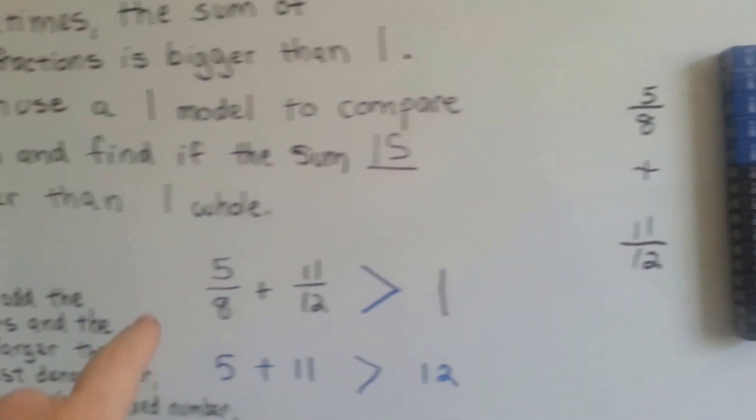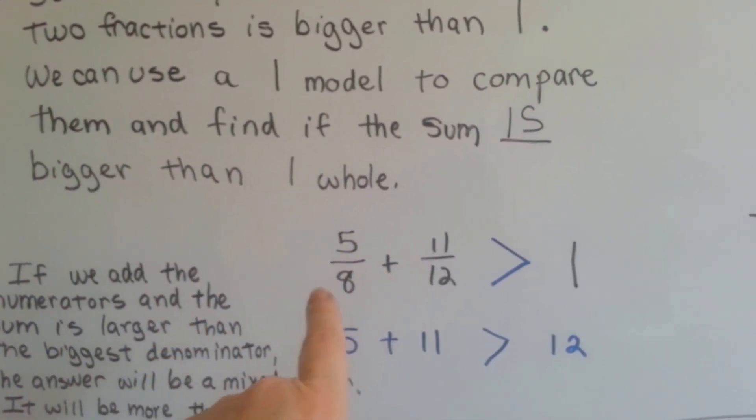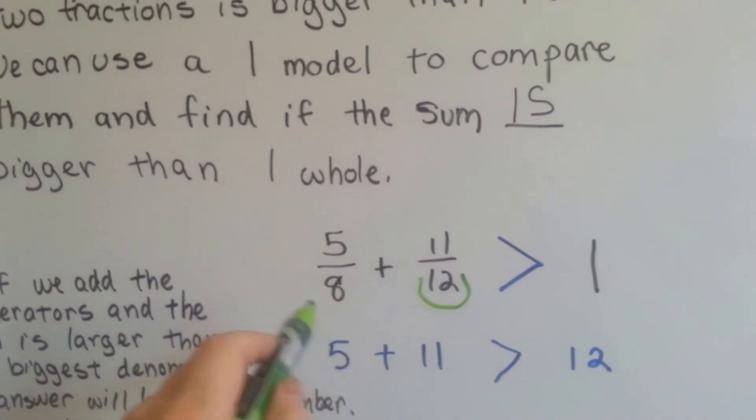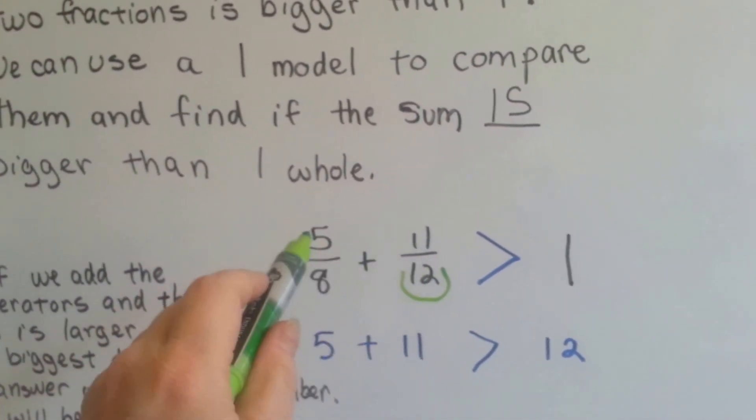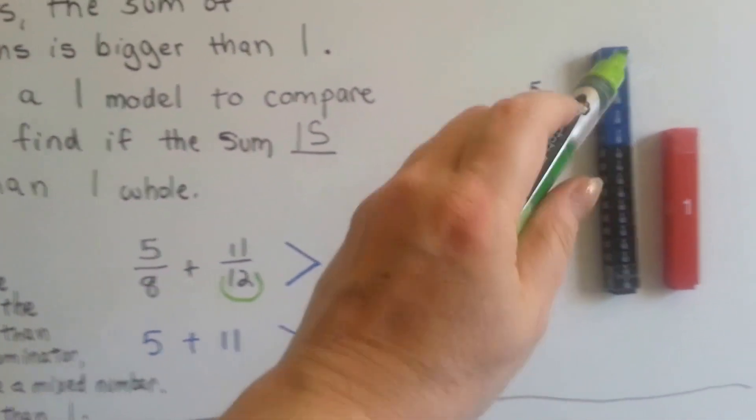And look, we would have known just by looking at the numerators and the denominator. Find the bigger denominator. That would be the 12. Add the 5 and the 11. That's 16. 16 is bigger than 12. It's going to be more than 1.